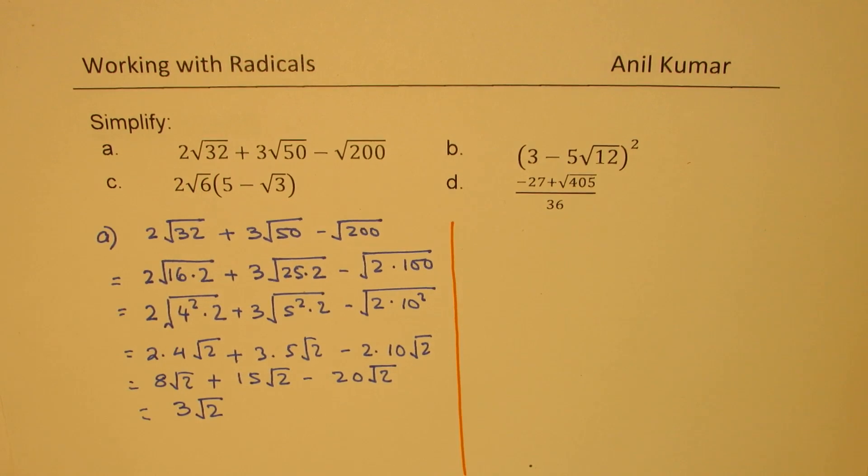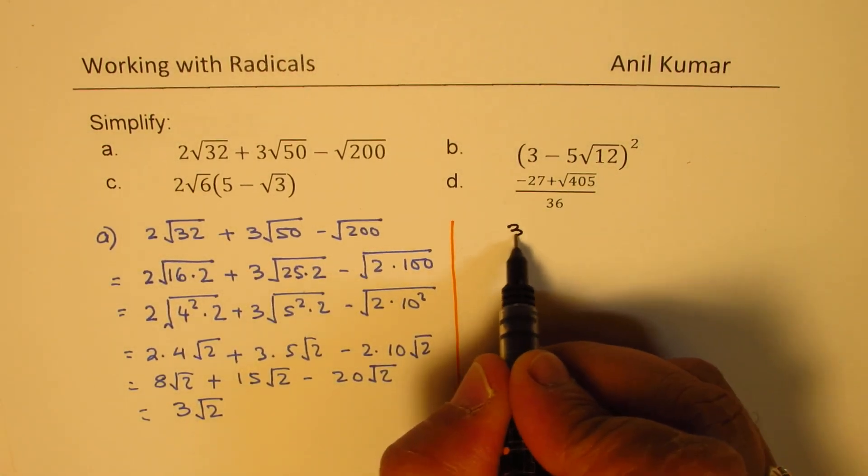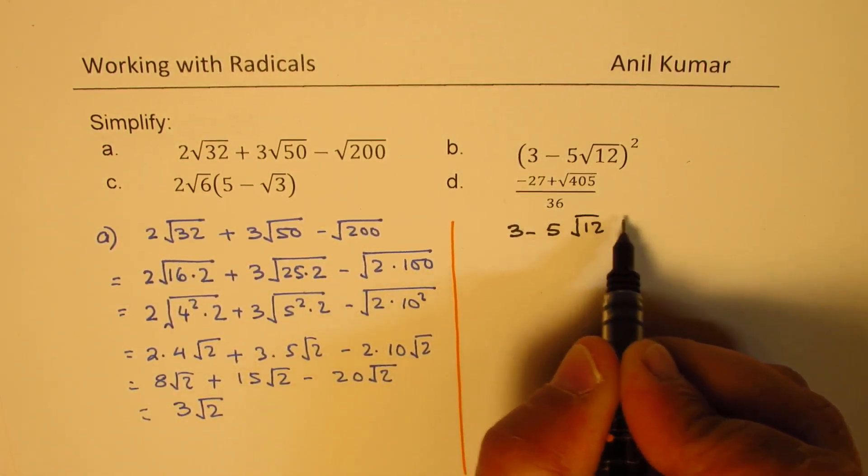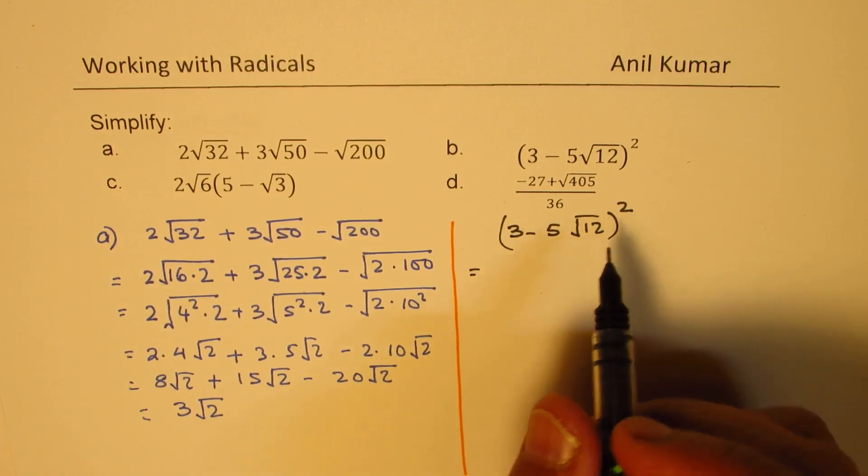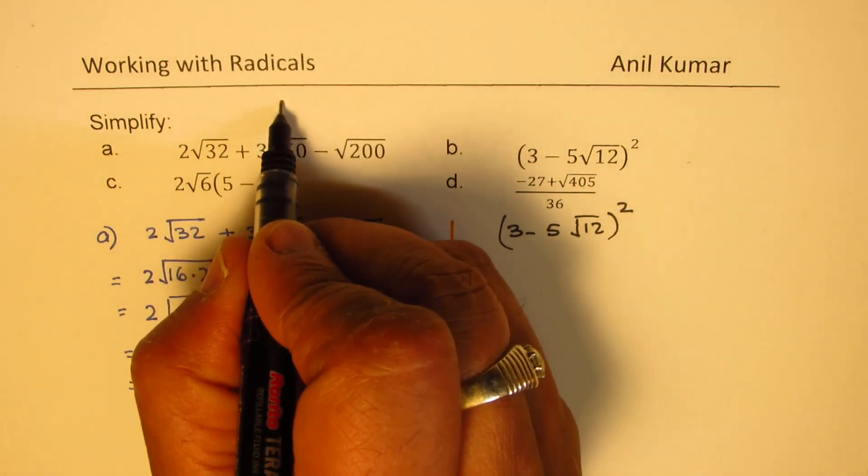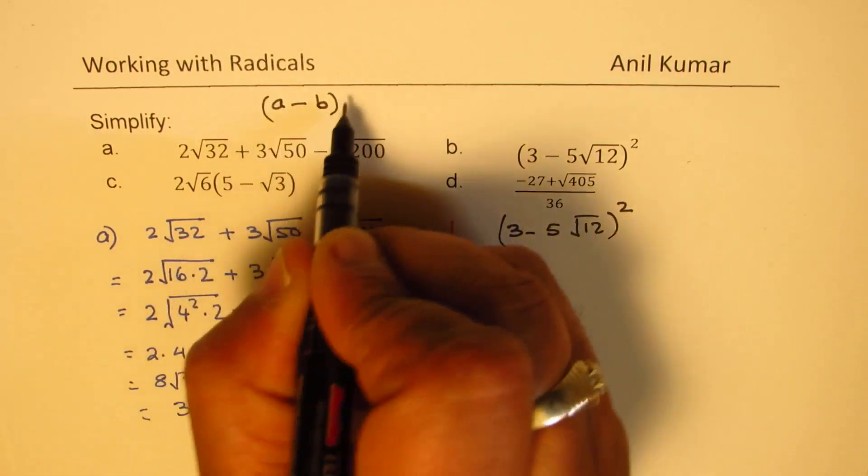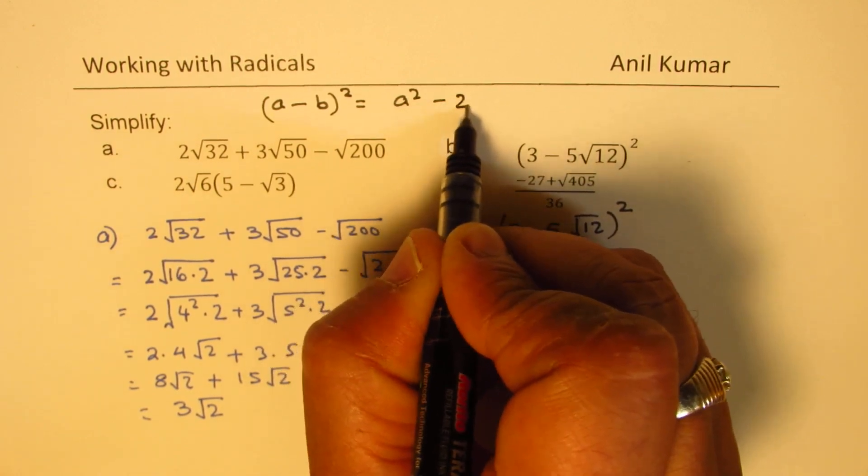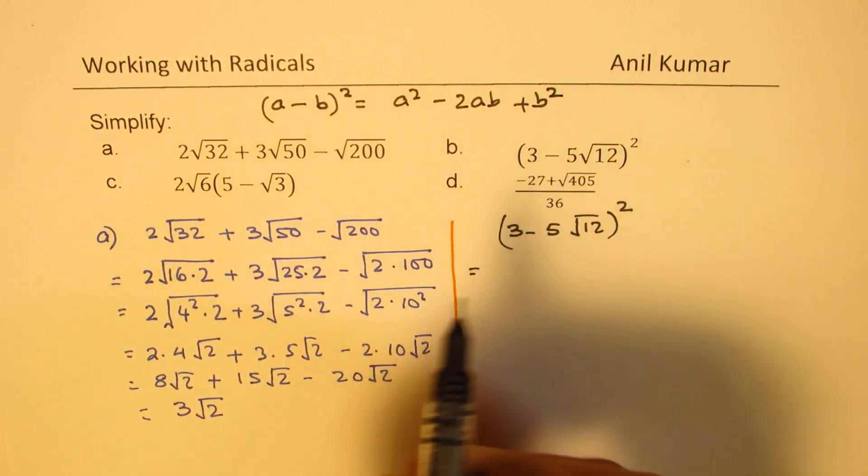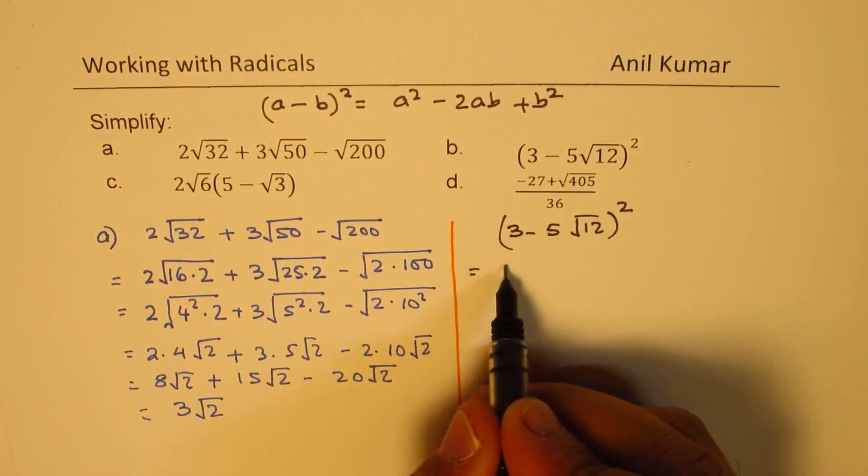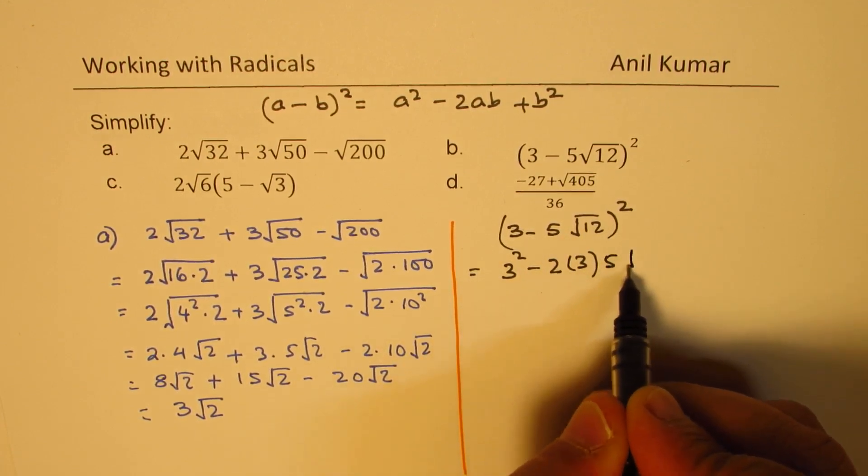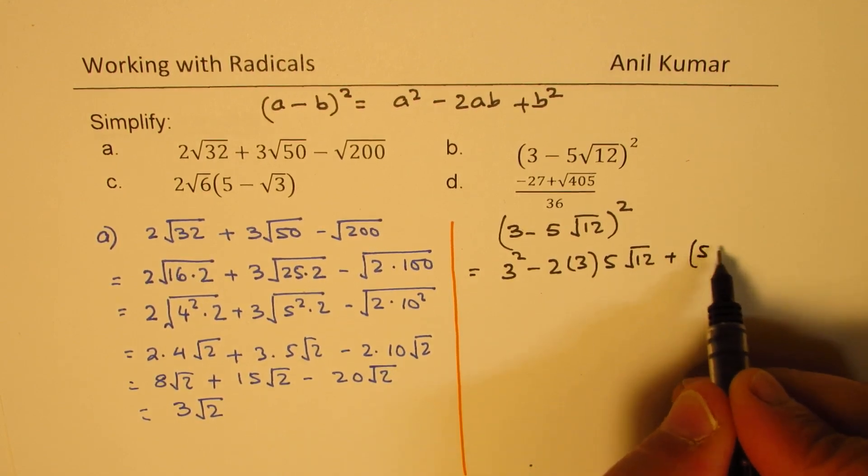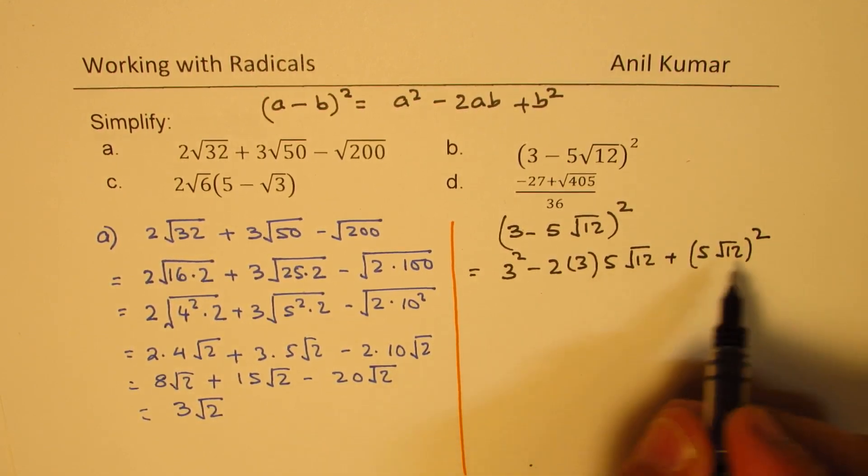I hope the steps are clear. Now let's take part B which is finding the product. So we have here (3 - 5√12)². Now whole square really means you are multiplying the same term by itself. You can also use the quadratic formula which is, we are using minus here, (a - b)² = a² - 2ab + b². So we will use this formula to expand.